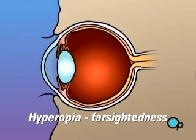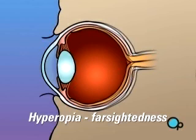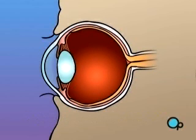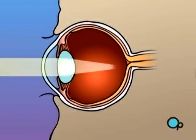Hyperopia, or farsightedness, occurs when the shape of the eye is too short. In this case, light rays are focused on a point behind the retina.